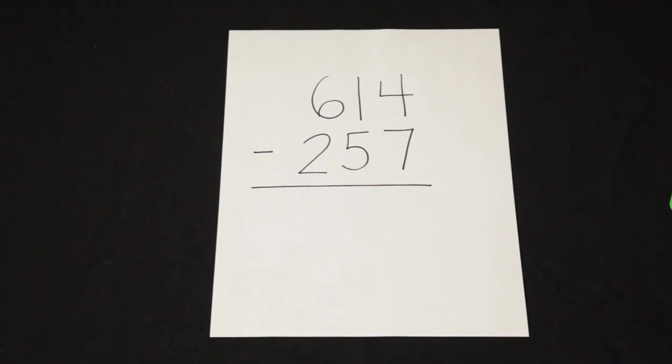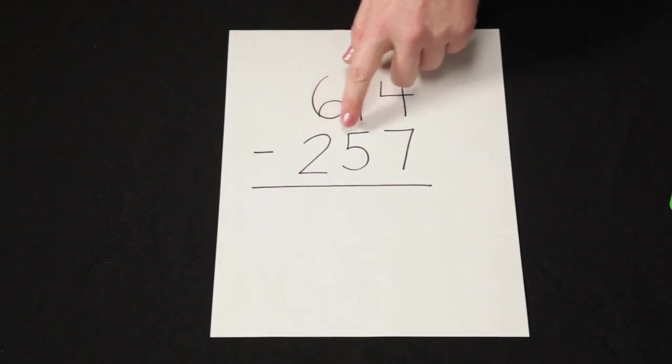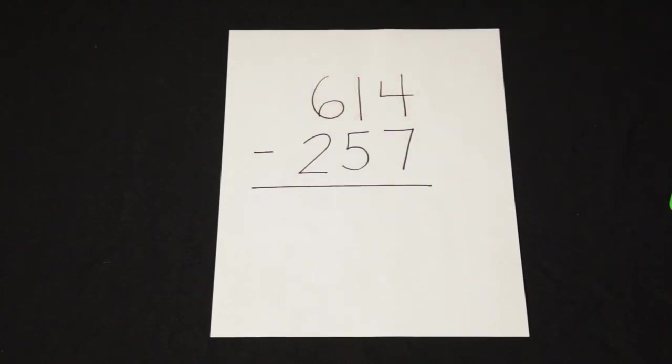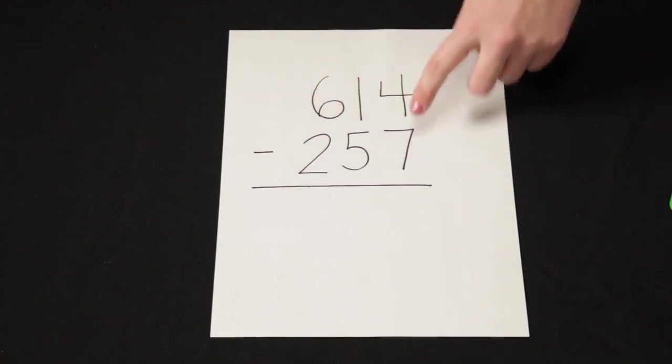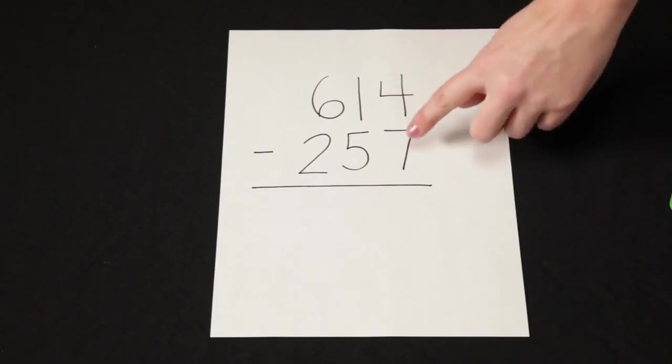I can use the traditional algorithm to subtract 614 minus 257. With the traditional algorithm, I start in the ones column. I have 4 minus 7.